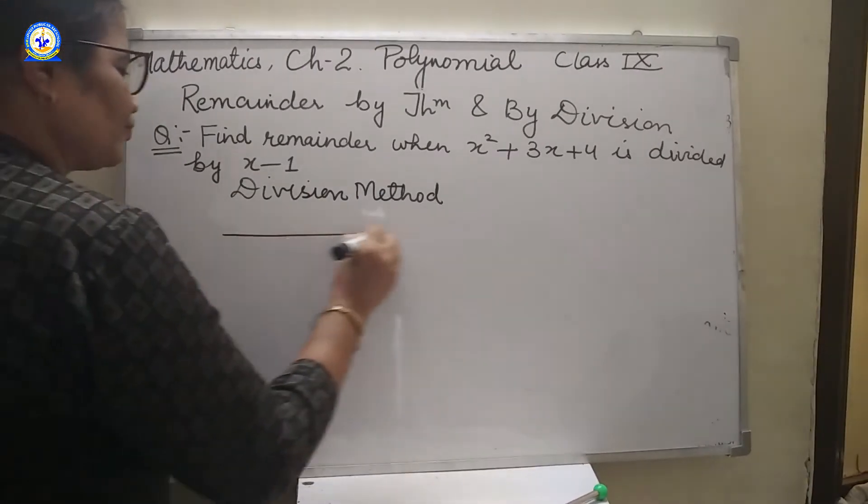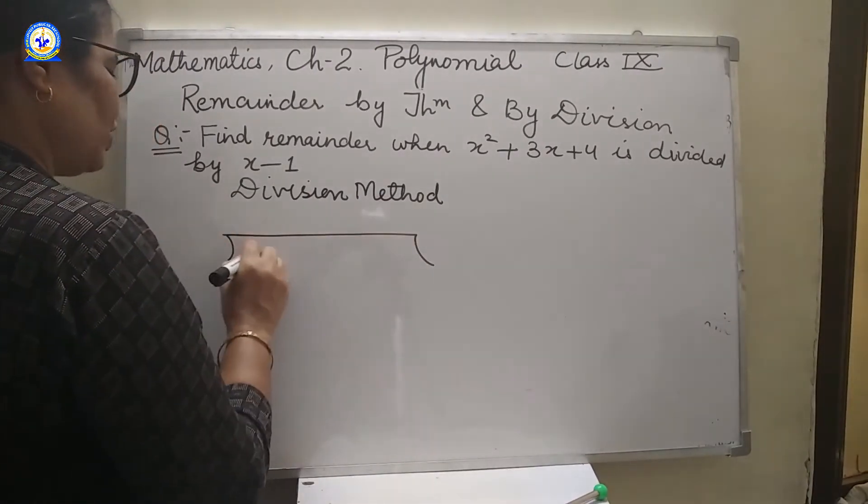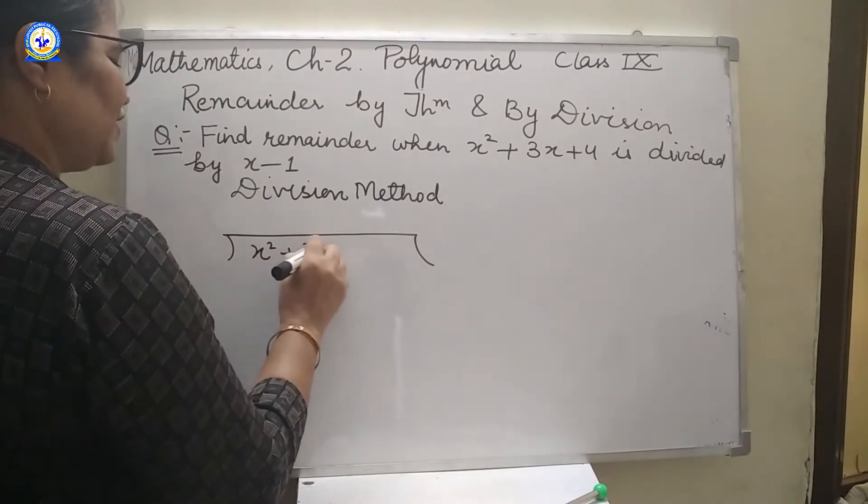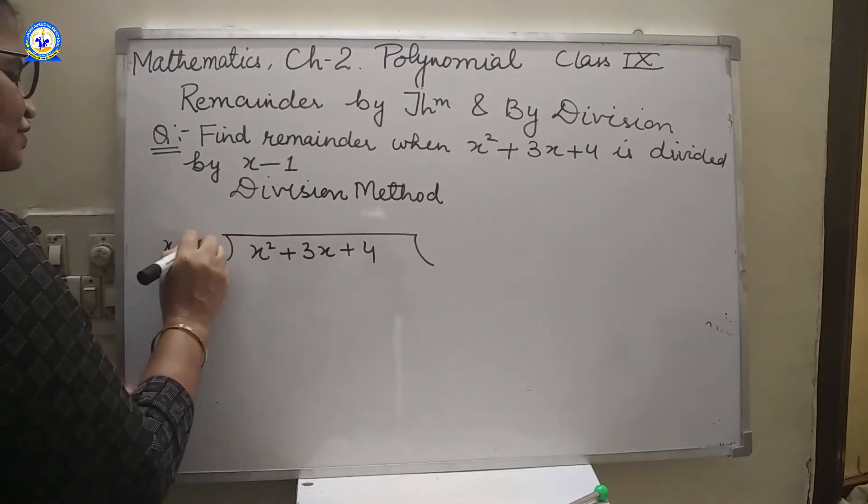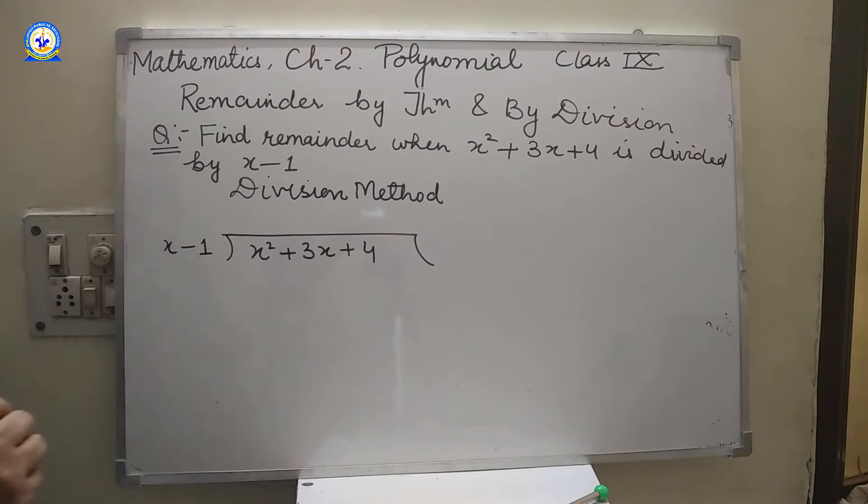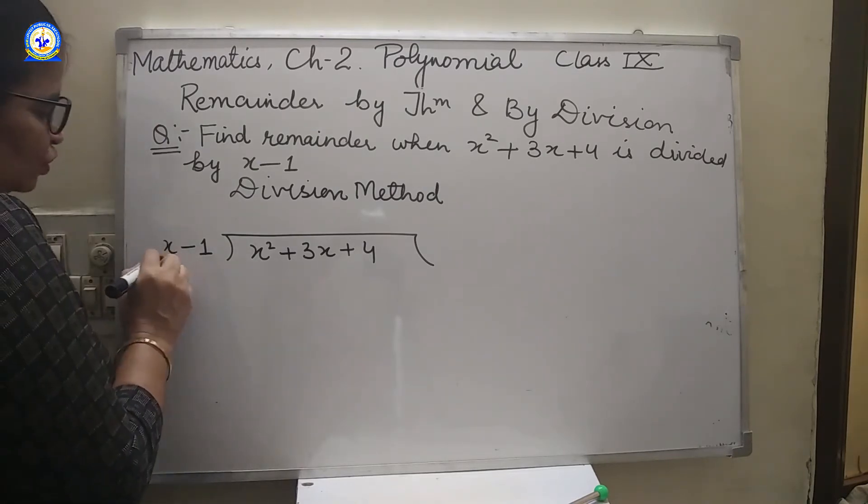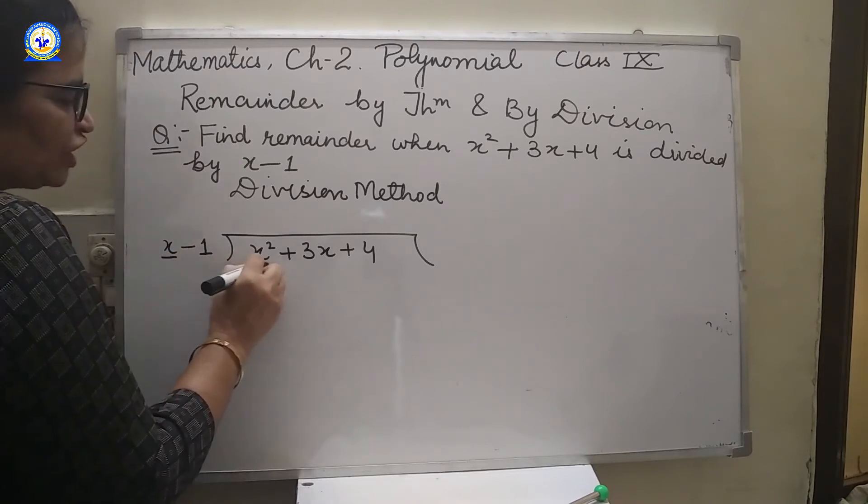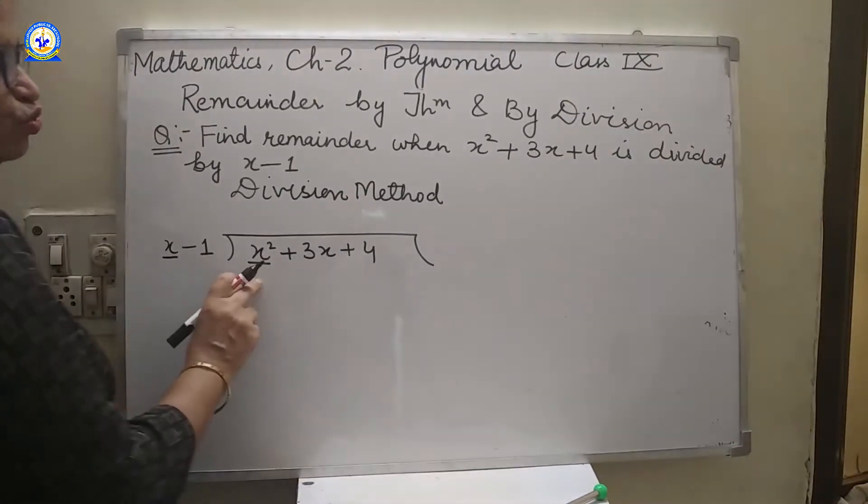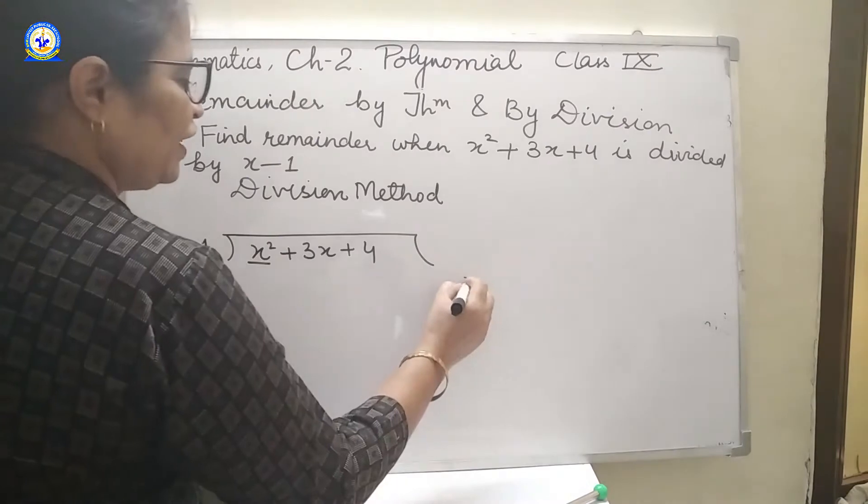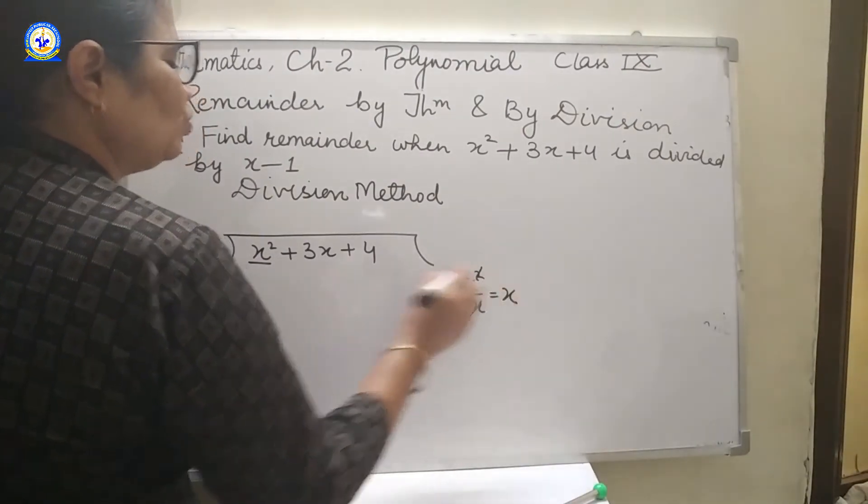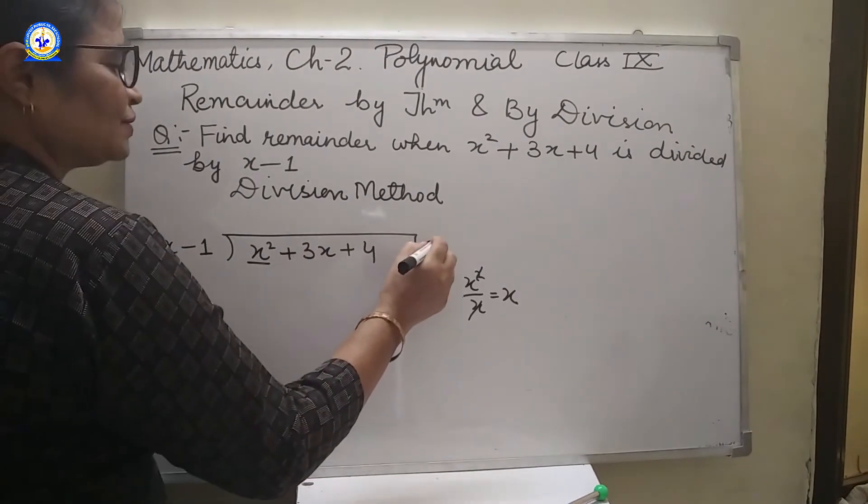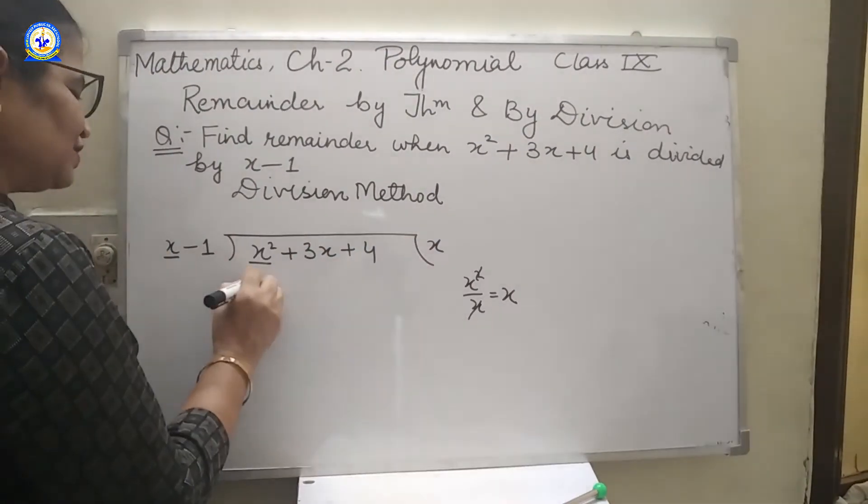This x square plus 3x plus 4 when divided by x minus 1. Now x should be multiplied by which number so that it becomes x square? We find x square upon x. That means we need to multiply it by x. x into x is x square.